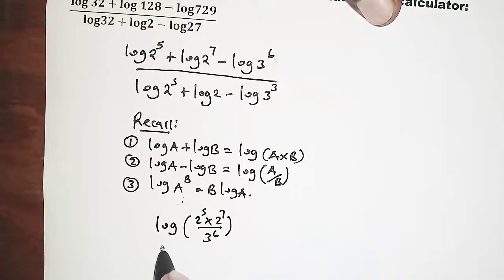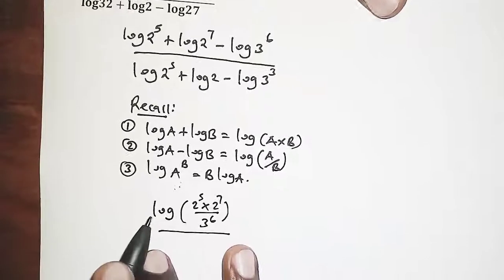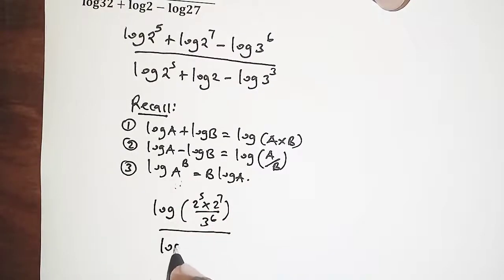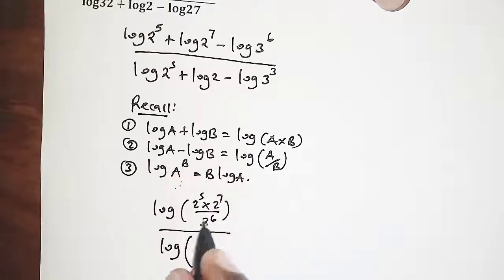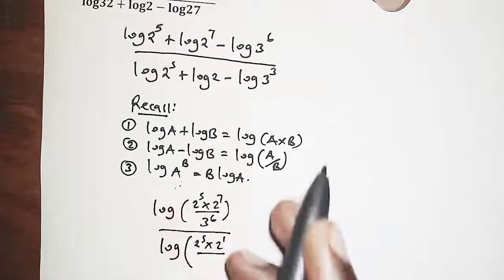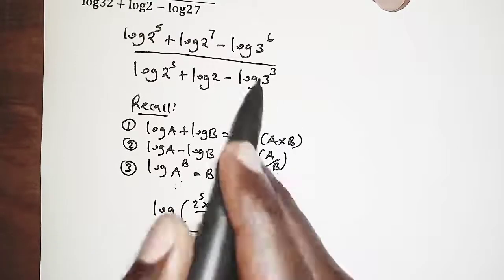For the denominator we are also going to apply the same. We have logarithm of 2 power 5 times 2, so 2 is just 2 power 1, all over because we are subtracting, all over 3 power 3.